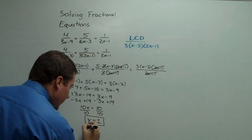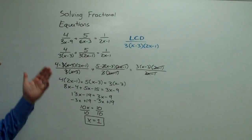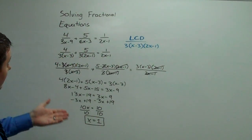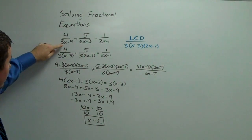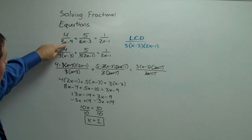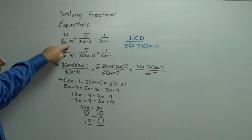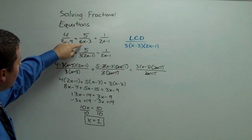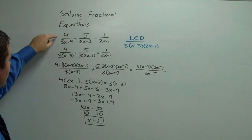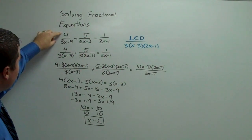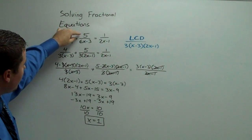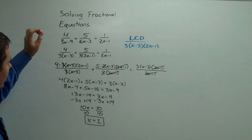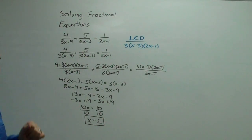Now we need to double-check and make sure it's an actual solution, since it's possible our solution makes a denominator zero and thus undefined. Substituting x equals 1: 4 over 3 minus 9 is 4 over negative 6, which is negative 2 thirds, plus 5 over 6 minus 3 which is 5 over 3. You can use your calculator to verify that this is correct. x equals 1 is our solution.